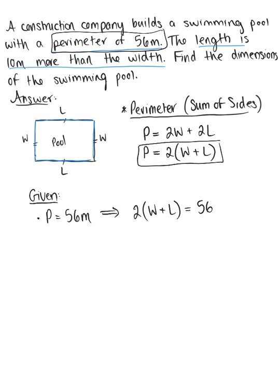We can simplify this by dividing both sides by two. Two divided by two becomes one, and 56 divided by two is 28. So the perimeter equation simplifies to W + L = 28.